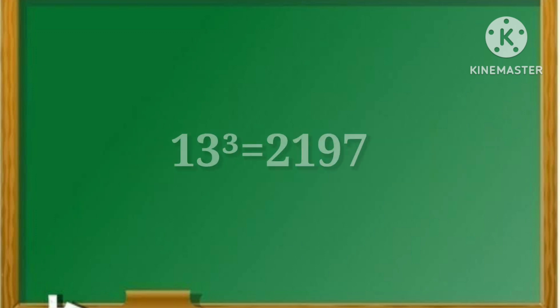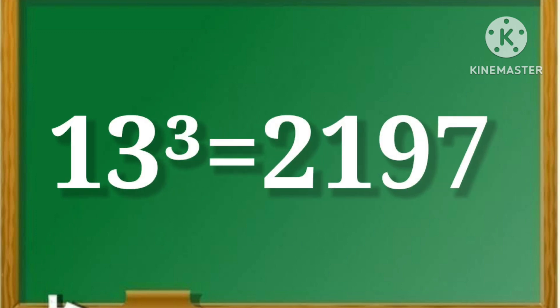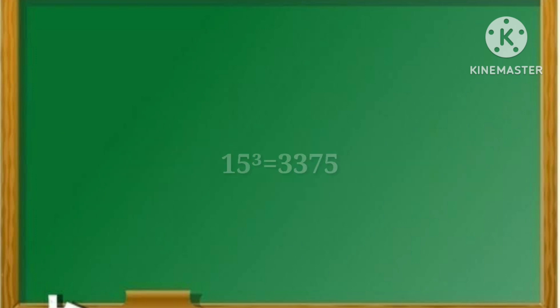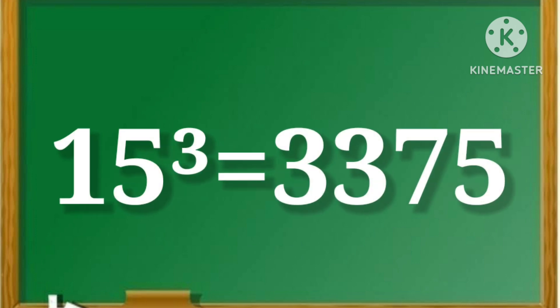13 cube is equal to 2197. 14 cube is equal to 2744. 15 cube is equal to 3375.